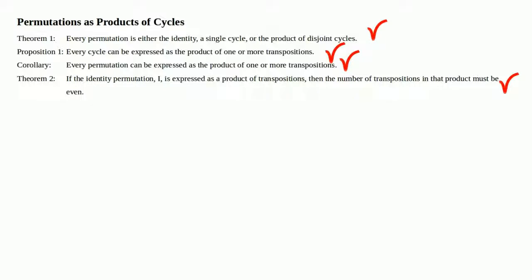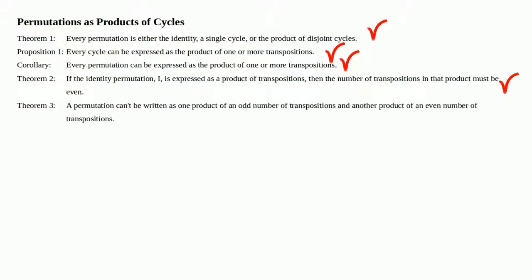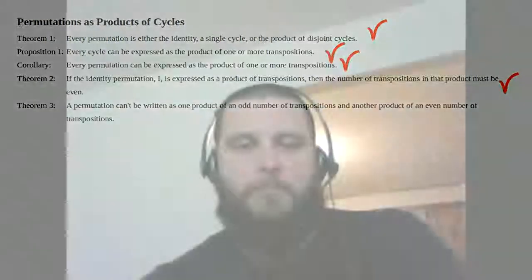That's Theorem 2: if the identity permutation I is expressed as a product of transpositions, the number of transpositions must be even. Next time we'll tackle Theorem 3: a permutation cannot be expressed both as a product of an odd number of transpositions and as a product of an even number of transpositions — it's always one or the other. See you then.